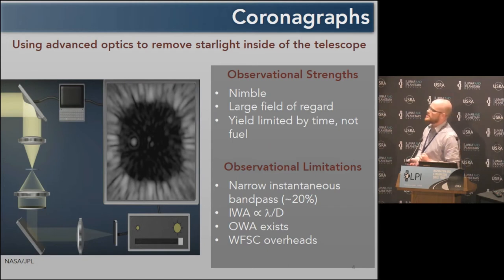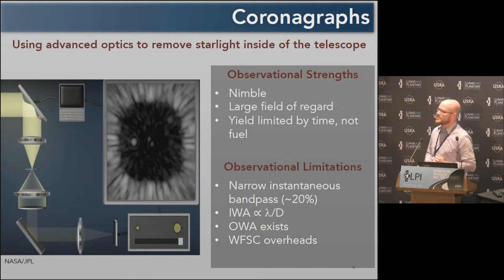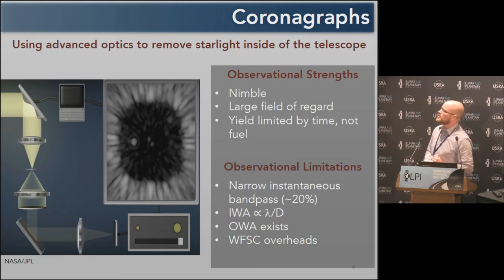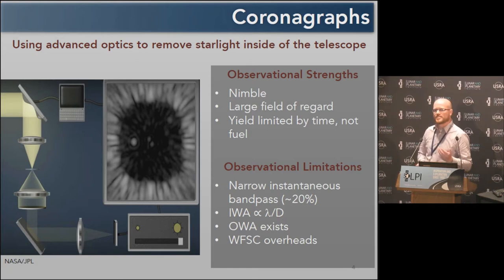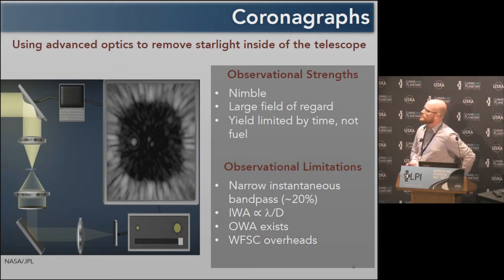Coronagraphs are essentially the opposite. Instead of blocking light externally, we allow the starlight to enter the telescope, diffract all over the place, and then we have to clean up the mess using advanced optics and deformable mirrors. The strength is that because it's inside the telescope, it's obviously much more nimble — you simply repoint the telescope. There is an overhead associated with re-digging the dark hole, but overall it's a much more nimble instrument.